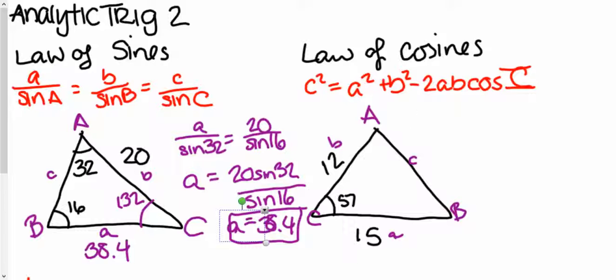So I know that c squared is little a squared, or 15 squared, plus 12 squared,